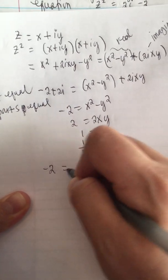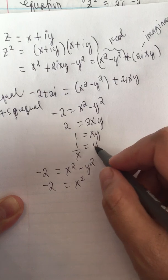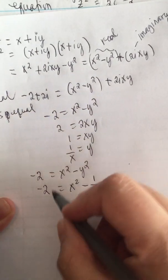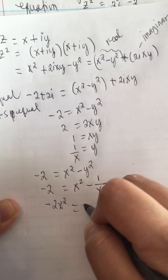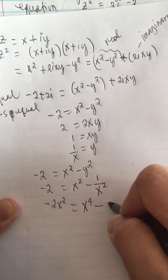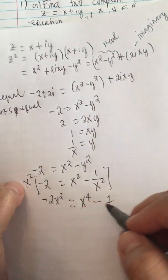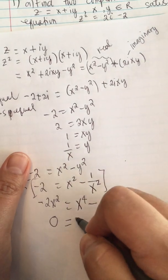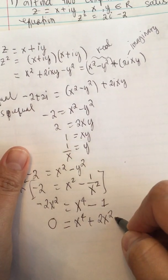Substituting y = 1/x into x² - y² = -2, and since y² = 1/x², we multiply everything by x² to eliminate the denominator. This gives -2x² = x⁴ - 1, and rearranging yields 0 = x⁴ + 2x² - 1.